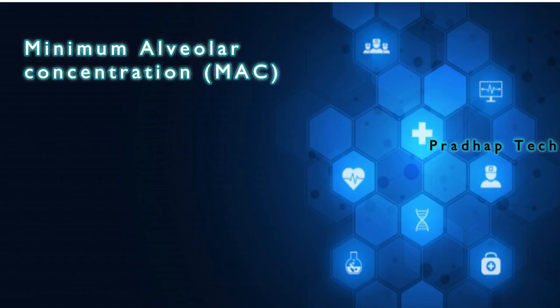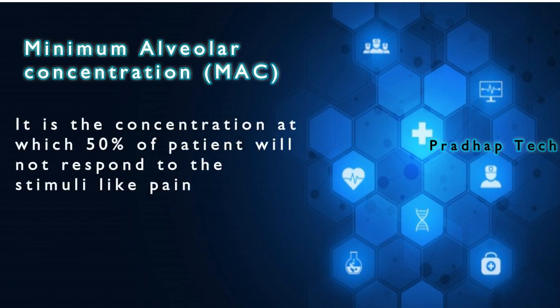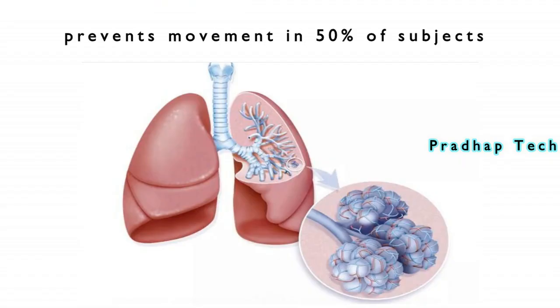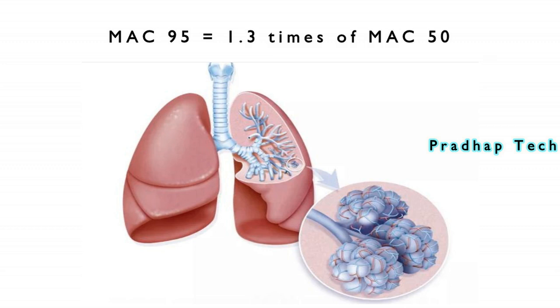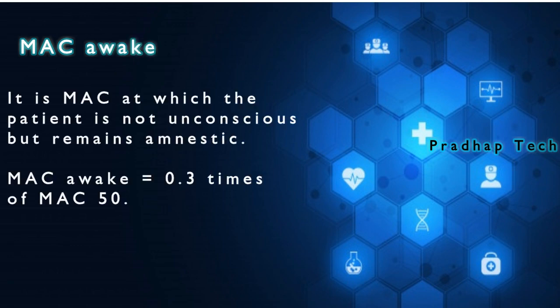Minimum alveolar concentration MAC is the concentration at which 50% of patients will not respond to stimuli like pain. MAC is the concentration of a vapor in the lungs which prevents movement — motor response — in 50% of subjects in response to surgery. MAC 95 equals 1.3 times MAC 50. Another MAC used in clinical practice is MAC awake: it is the MAC at which the patient is not unconscious but remains amnestic. MAC awake equals 0.3 times MAC 50.